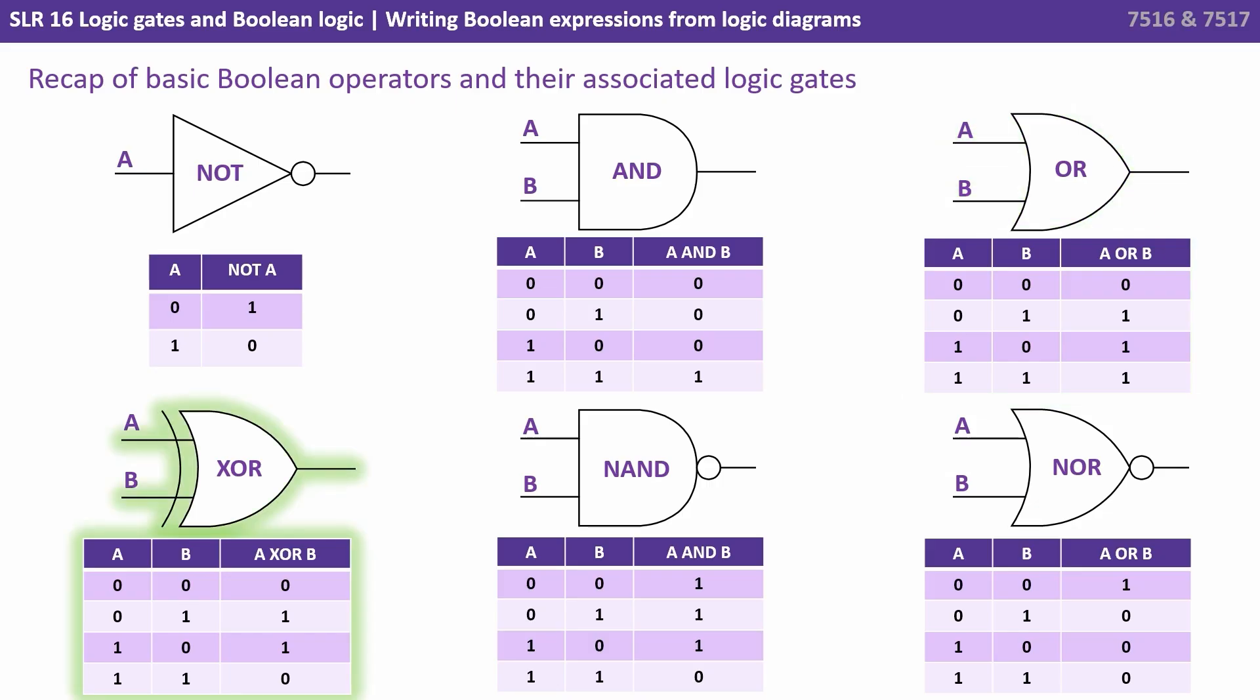We have an XOR gate or exclusive OR gate where one and only one of the inputs needs to be true for the output to be true.